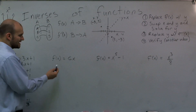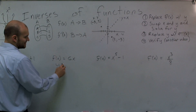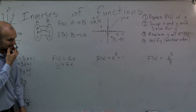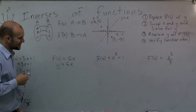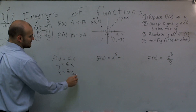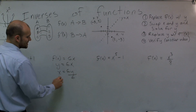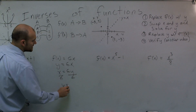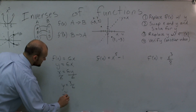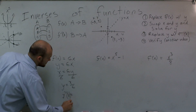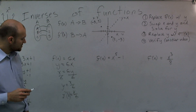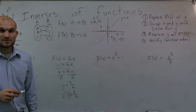Next, plug in y = 6x. Swap x and y's: x = 6y. Divide by 6, giving y = x / 6. Put it in correct notation: f inverse of x equals x over 6.